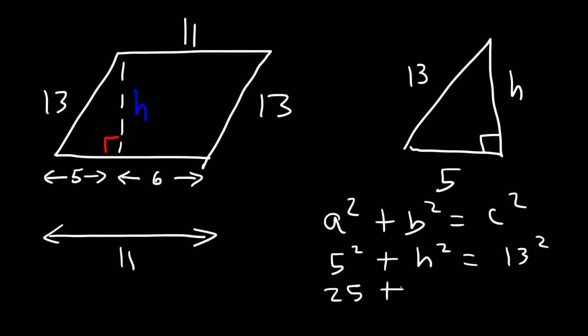5 squared is 25. 13 times 13 is 169. 169 minus 25 is 144. So now let's take the square root of both sides. The square root of 144 is 12, so now we have the height.